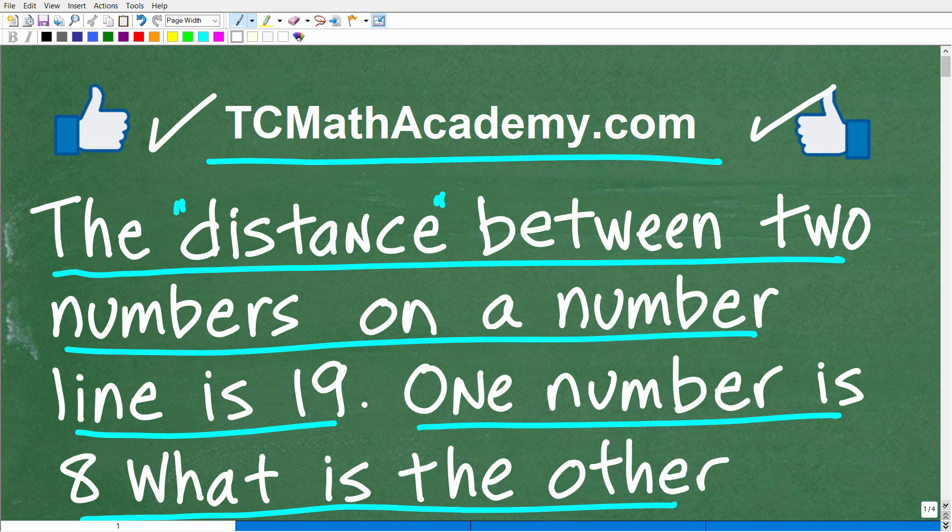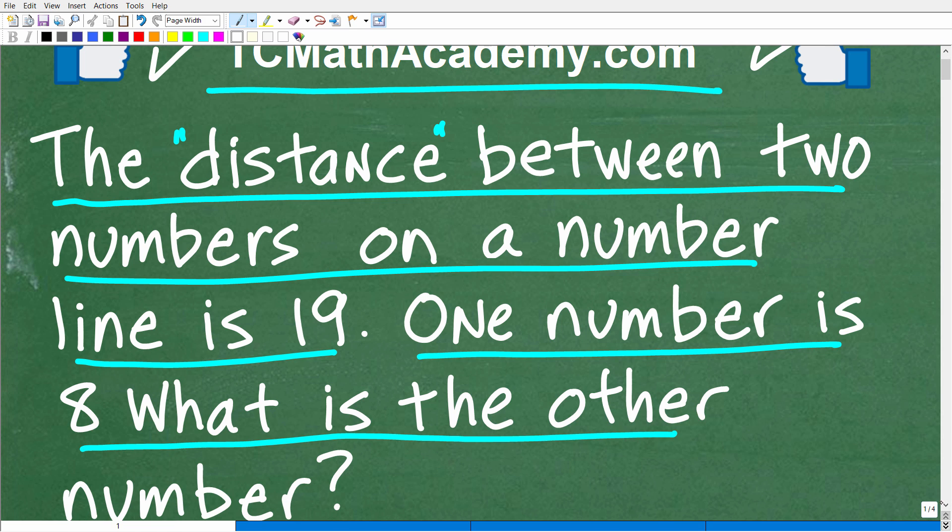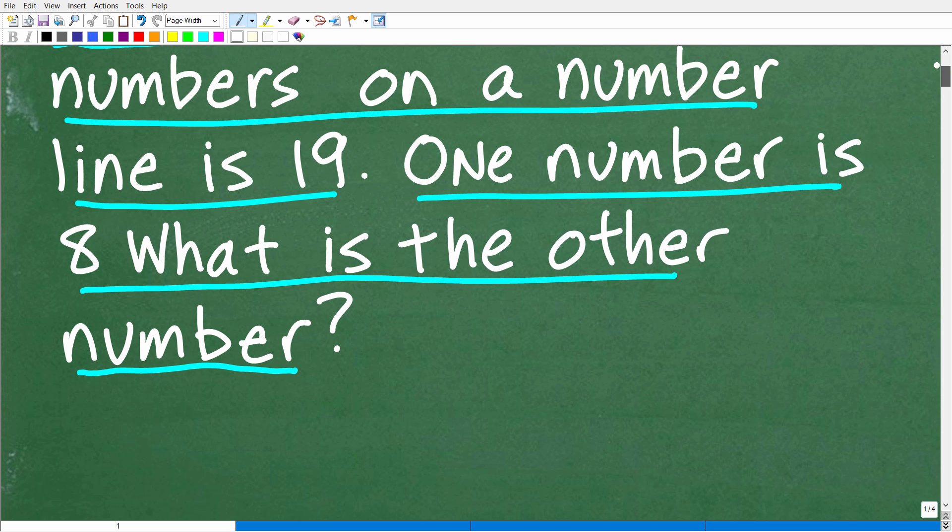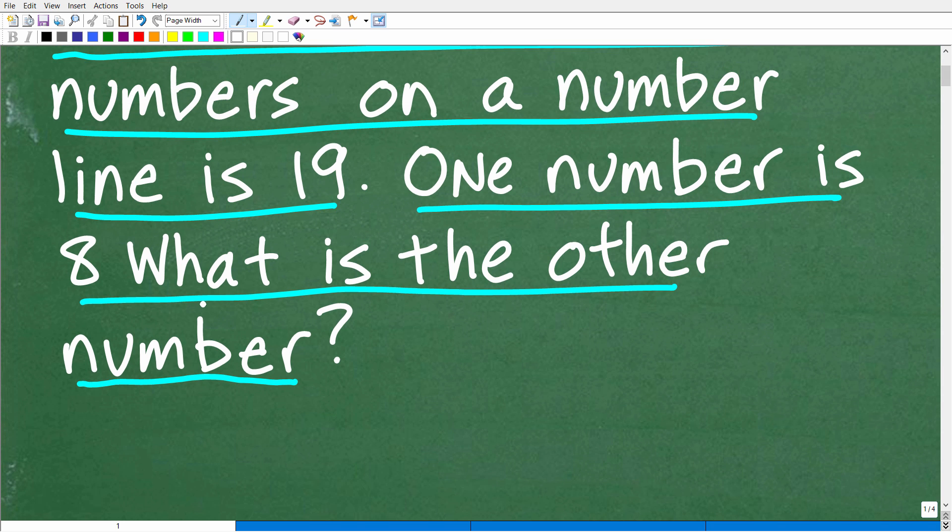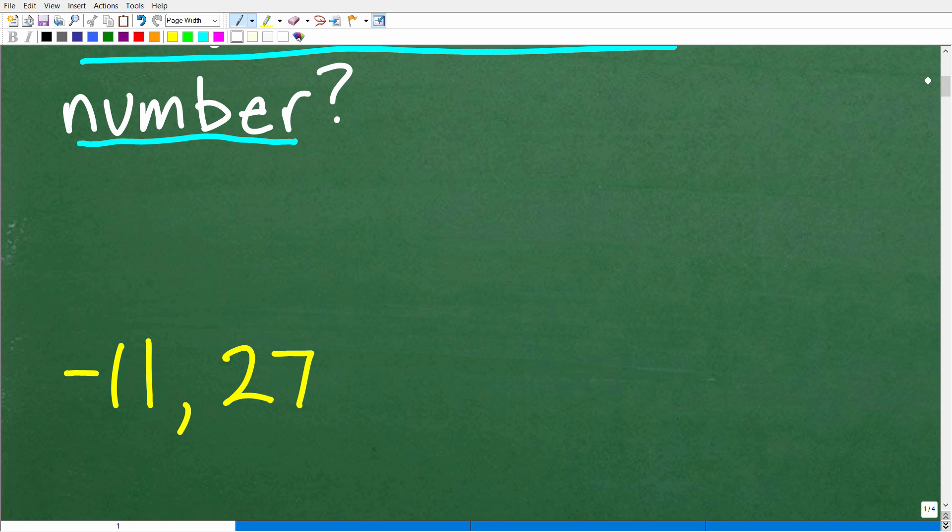Okay, so let's go and take a look at the answer. This could be considered a bit of a trick question. Now, you might be saying, what are you talking about, Mr. YouTube Math Man? Well, we're looking for one number is 8, what is the other number? Two numbers on the number line, the distance is 19. One number is 8, what is the other number? Well, actually, there are two numbers: negative 11 and 27.